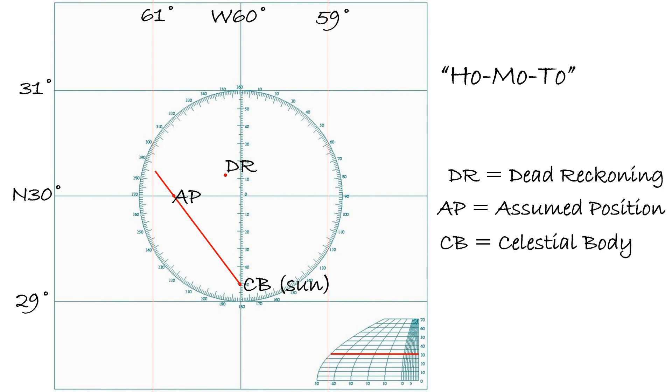The mnemonic HO-MO-TO helps to remember this rule. In our example, let's say HO is larger than HC, so the HO-MO-TO mnemonic reminds us that we measure from the assumed position towards the celestial body.